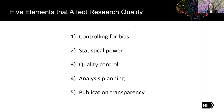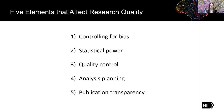So what can we do about it? We can introduce experimental elements into each step that help mitigate some of these issues. For example, we can control for bias, make sure that we have high statistical power, introduce quality control, plan our analyses in advance, and finally be completely transparent during the publication process. Now I'll go through each of these five elements in more detail.